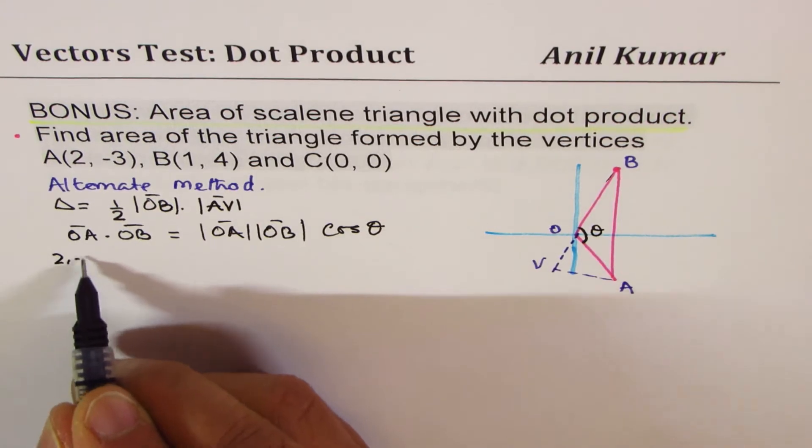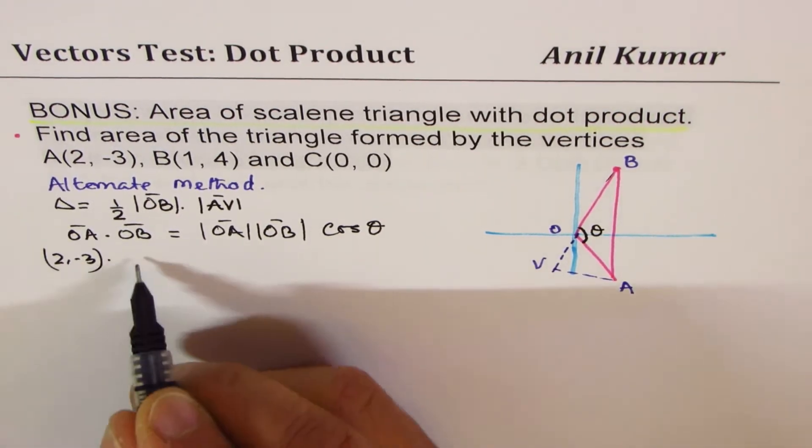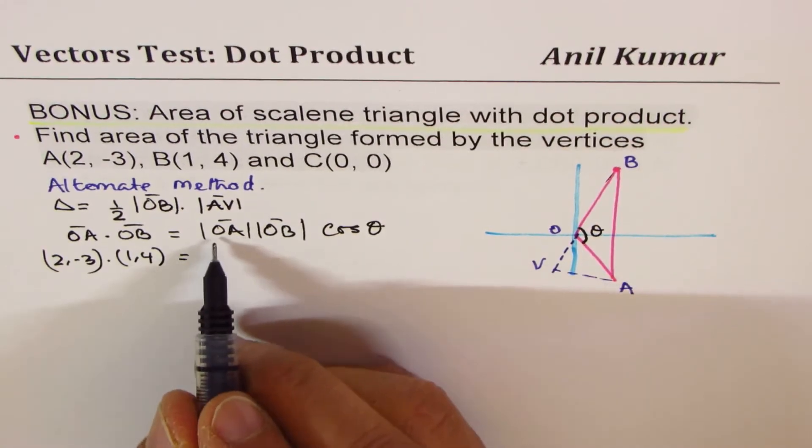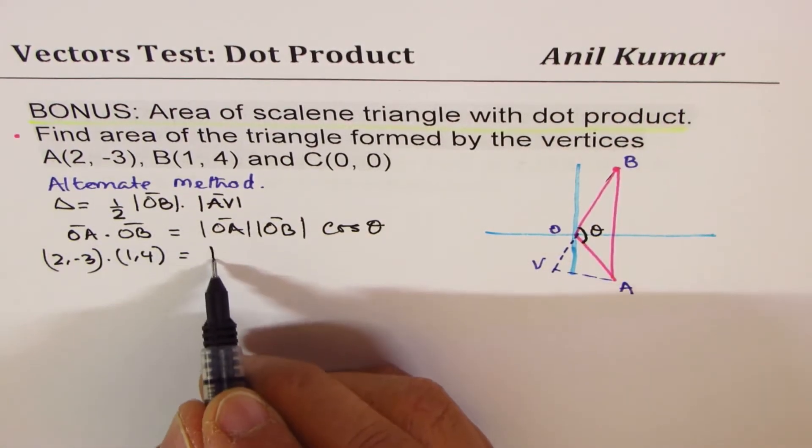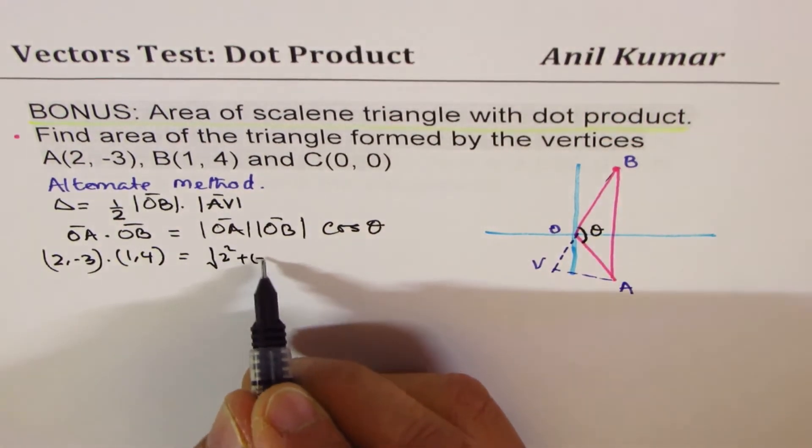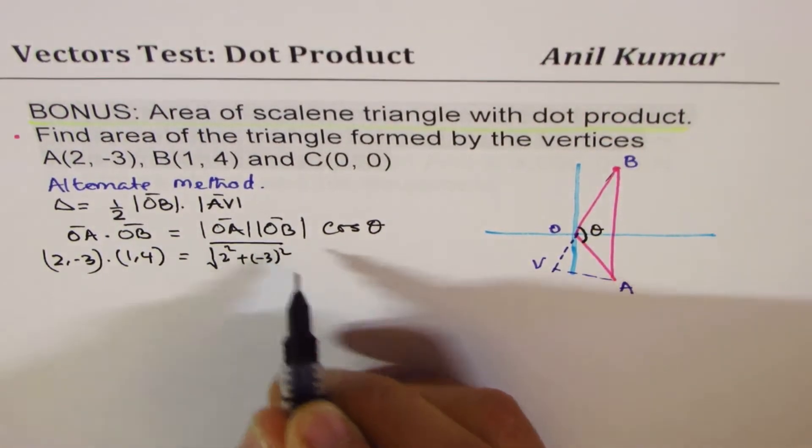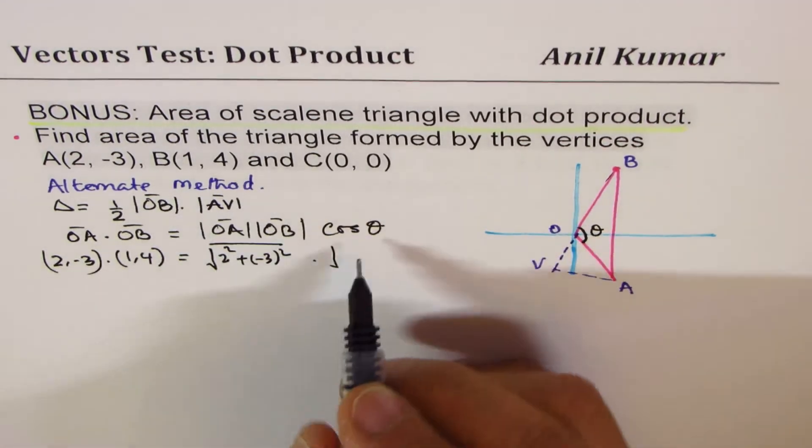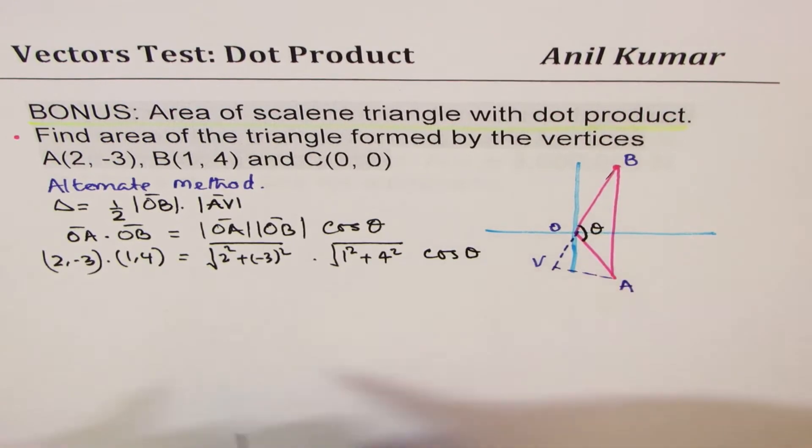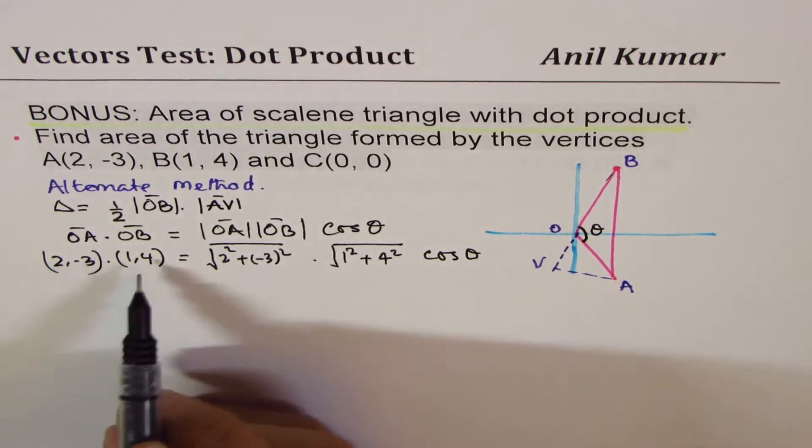So OA dot OB is (2, -3) dot (1, 4). And this is magnitude of OA, which is √(2² + (-3)²), times √(1² + 4²), times cos θ.